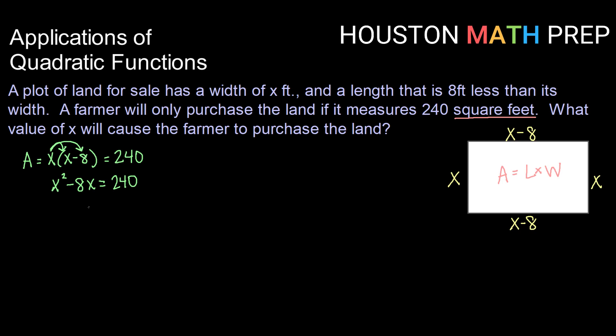Now to use any of my solving methods, I need the right hand side to be equal to 0. So subtracting over that 240, I get x² - 8x - 240 = 0.